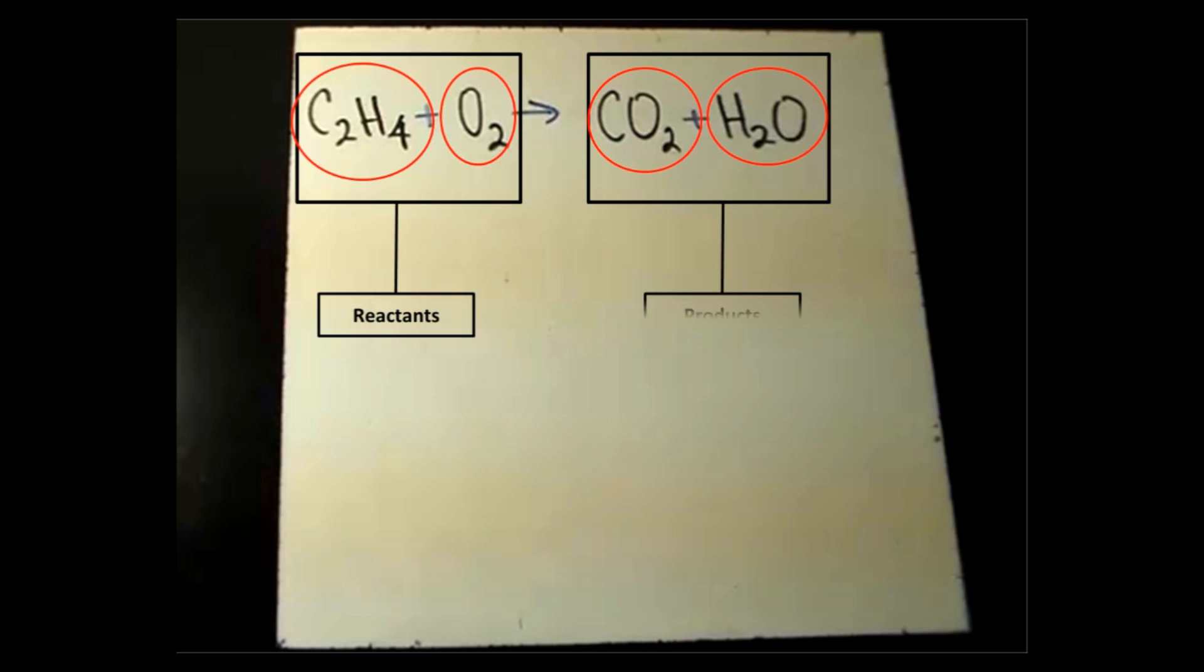The compounds on the right, CO2 and H2O, are called products. The subscripts indicate how many of each element is bonded together in that compound.